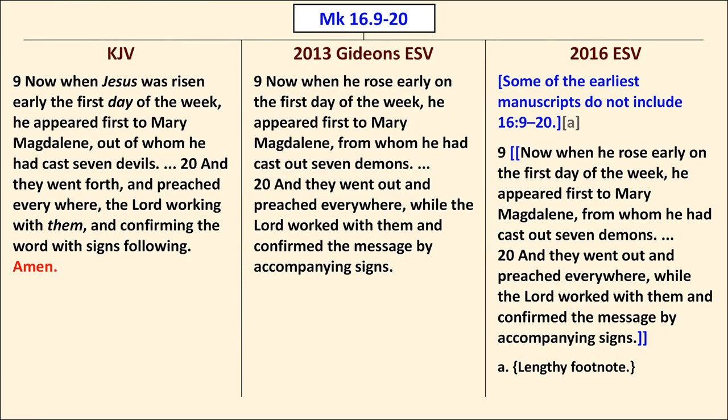Let's move on to the Big Three. The first of the Big Three is the longer ending of Mark. The 2016 English Standard Version includes a note before this passage saying some of the earliest manuscripts do not include it, and it places it in double brackets, with the passage itself included in a lengthy footnote. The King James Version includes it, and the Gideon's ESV includes it as well, although it omits the Amen at the end.